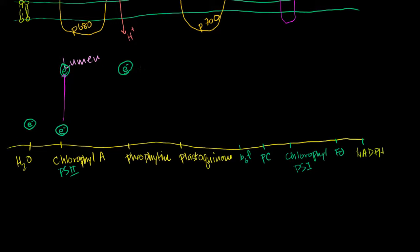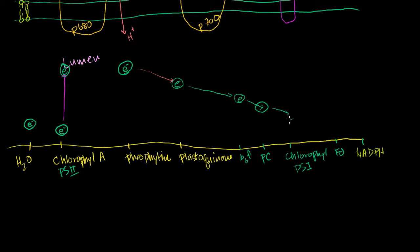Then it keeps being transferred from the pheophytin — it goes to the plastoquinone, to a slightly lower energy state. Then it keeps going to a slightly lower energy state in the cytochrome B6F complex. And then you have the plastocyanin complex at a lower energy state. And then eventually it goes into photosystem I at an even lower energy state.